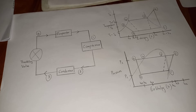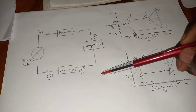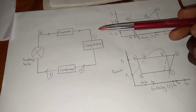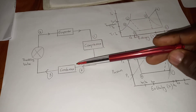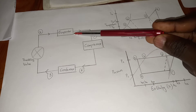Hello guys, today we're looking at the refrigeration process. This is Power Machines N6 — this is one of the slightly complex topics of Power Machines N6. Refrigeration has four components: the compressor, the condenser, the throttling valve, and the evaporator.